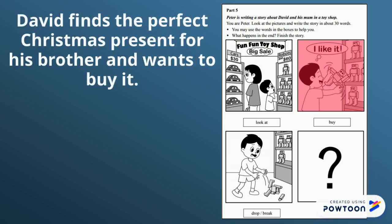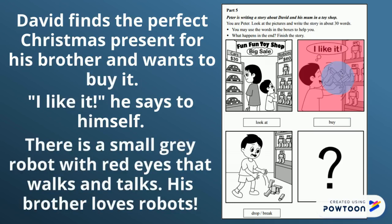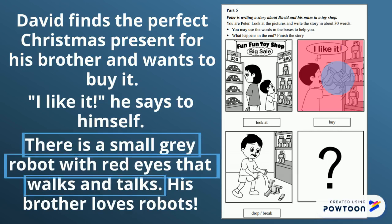David finds the perfect Christmas present for his brother and wants to buy it. 'I like it,' he says to himself. I have mentioned 'buy' and 'I like it' — they have given me a great idea for a sentence. There is a small grey robot with red eyes that walks and talks. His brother loves robots. Here I have just tried to describe the robot even more.